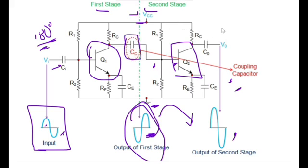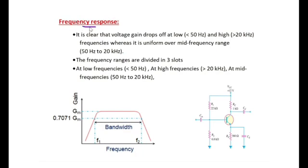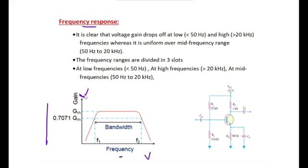Looking at the frequency response of the two-stage RC coupled amplifier, the frequency response is the curve drawn between frequency and gain of the amplifier — that is, the gain provided by the amplifier at different frequencies. This curve is drawn between gain and frequency for the practical two-stage RC coupled amplifier. We can see a linear increase at some frequencies, a constant region at some frequencies, and a decrease at other frequencies.